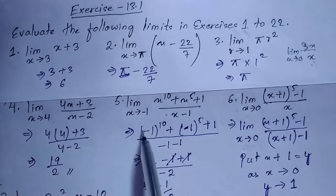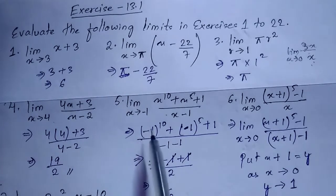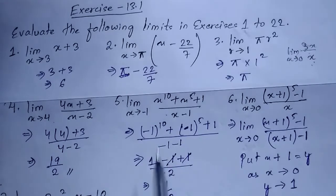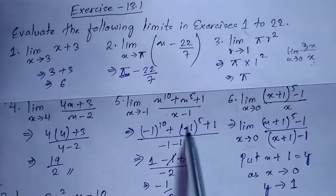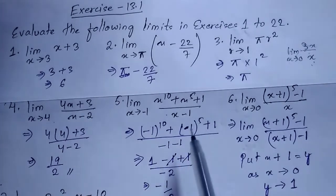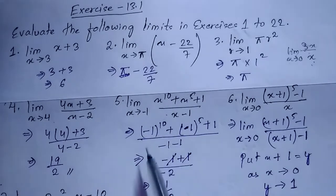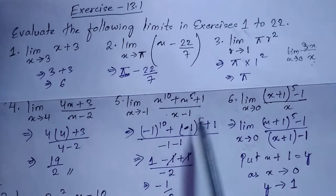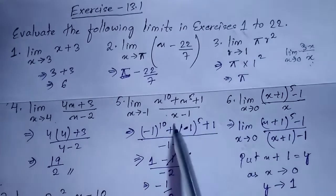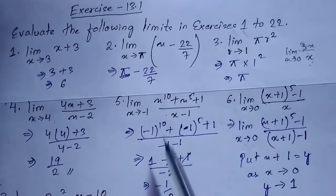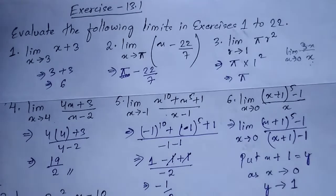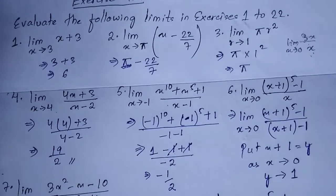For (−1)^10: negative multiplied 10 times (even) gives positive 1. For (−1)^5: negative multiplied 5 times (odd) gives −1. So the numerator is 1 + (−1) + 1 = 1 − 1 + 1; the −1 and +1 cancel, leaving 1 − 1 = 0... so the numerator gives −1 + 1 = 0? Actually: 1 − 1 + 1 over −2 = 1/(−2), so the answer is −1/2.